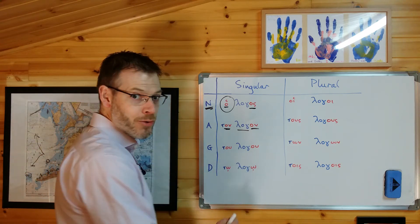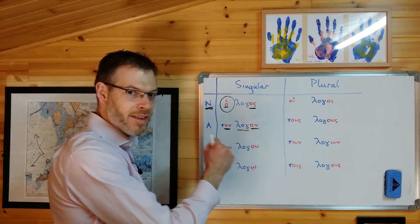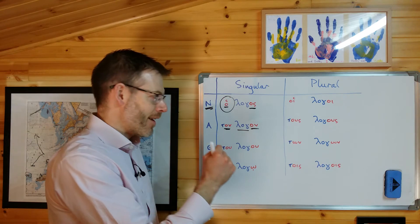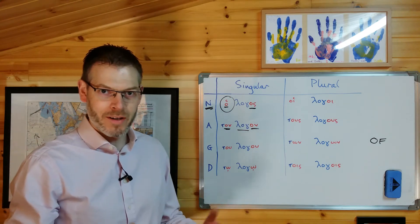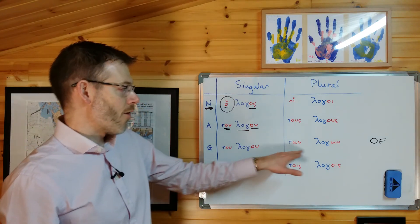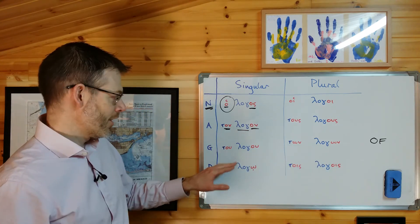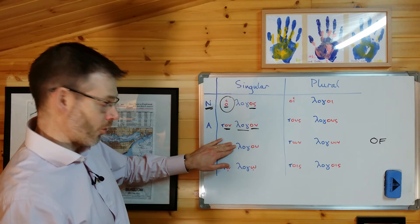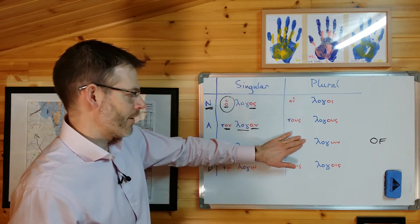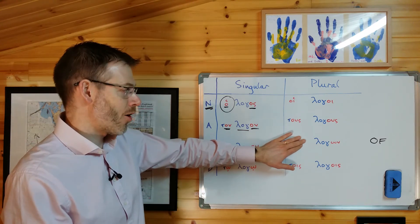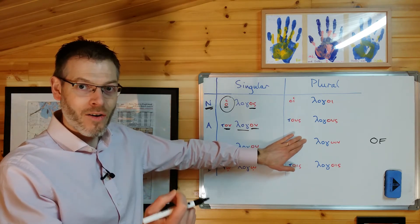Genitive, tu logoo, means of the word, of the word. When you see a genitive, think of, of the word, or of the words, of the words, plural. If there's no article, so you've just got logoo, it's of a word, of a word. If it's just the noun, no article, it's of words, of words. When you see the genitive, think of.